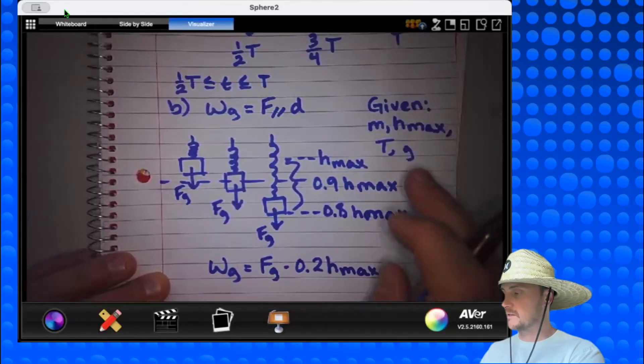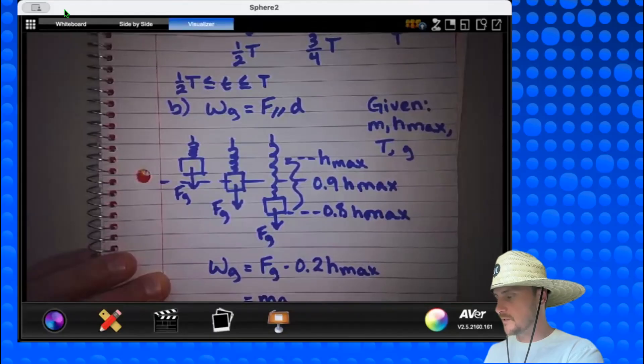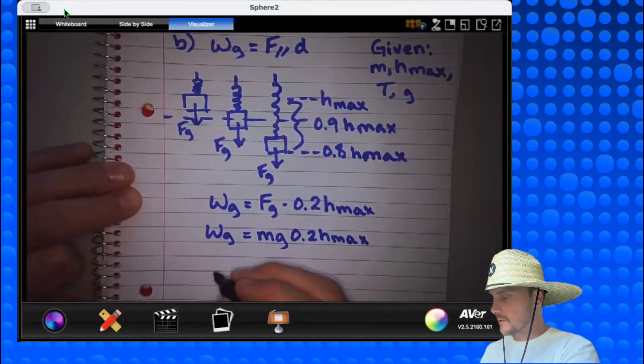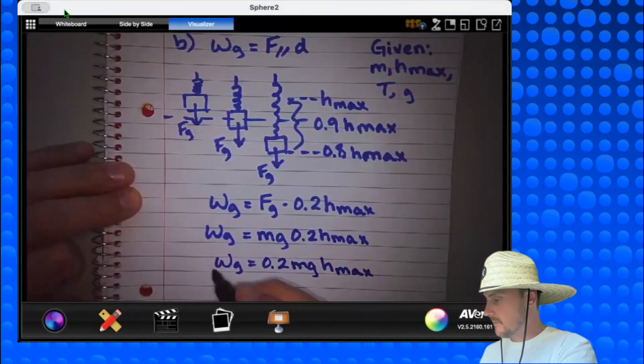So all I have to do for this part is that the work of gravity would be the force parallel to that distance, which is gravity, times the distance, which we just said was 0.2 h max. But the force of gravity is not one of my given terms. So what am I going to put in place? Of course, I'm going to put in place mg, which is equivalent to the force of gravity. And it's always a good idea to put our numbers in front of the whole expression. So my final expression will read 0.2 mg h max. Box it.